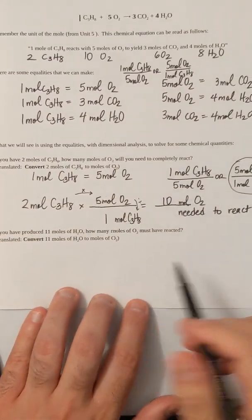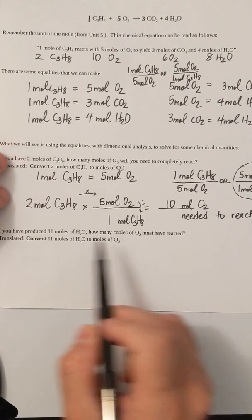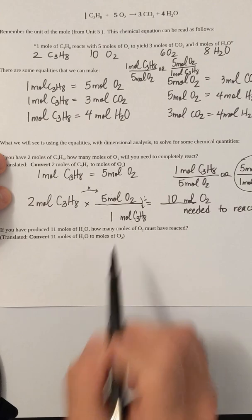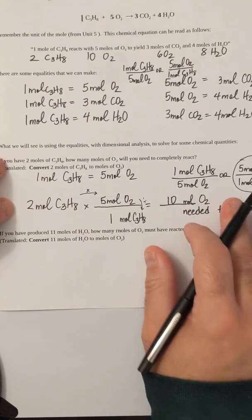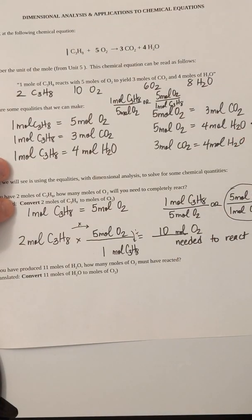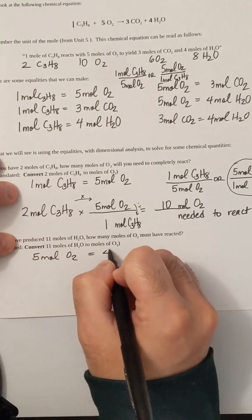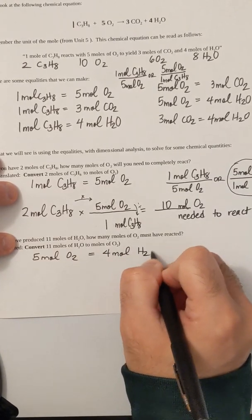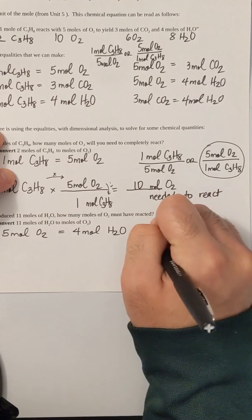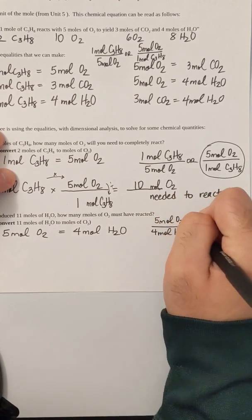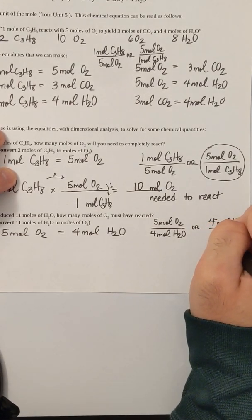Let's try one more. If you produced 11 moles of H2O, how many moles of O2 must have reacted? The question is: convert 11 moles of H2O to moles of O2. I have an equality between H2O and O2 from the equation: five moles of O2 equals four moles of H2O. So my conversion factors are five moles of O2 over four moles of H2O, or four moles of H2O over five moles of O2.